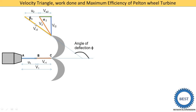So those are the velocity triangles for a Pelton wheel turbine. Next, we derive the equation of work done, but first we learn some important parameters.